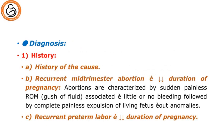To diagnose incompetent cervix: history of the cause as mentioned; sometimes history of difficult labor, forceps or ventouse delivery. Recurrent mid-trimester abortion with decreasing duration of pregnancy. Abortions are characterized by sudden painless rupture of membranes, associated with little or no bleeding, followed by complete painless expulsion of the fetus without anomalies. If we have this history, we should search for incompetent cervix. Recurrent preterm labor with decreasing duration may also be a presentation of recurrent miscarriage or preterm labor due to incompetent cervix.